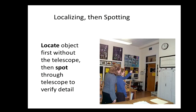However, never isolate the student from peers in regards to seating. Once you localize an object with the unaided eye, you spot it through a telescope to verify detail. This student first localized the clock on the wall, then lifted the telescope to her eye to spot it and verify the time.